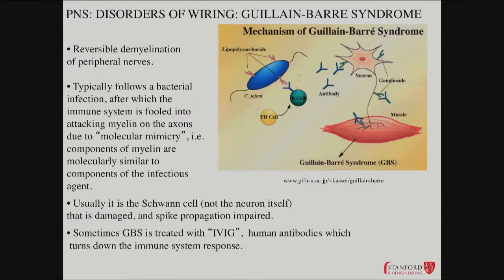Guillain-Barré syndrome is a pretty interesting one. This is a reversible demyelination of peripheral nerves — a really fascinating and terrifying course initially. You get someone coming in who has rapidly gotten weaker, maybe even having trouble breathing. It looks like everything's just spiraling into disaster.